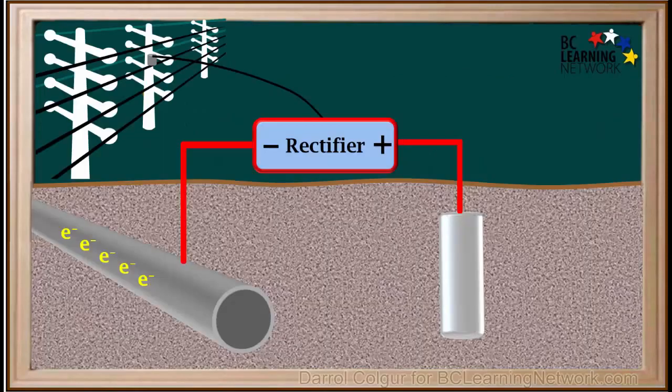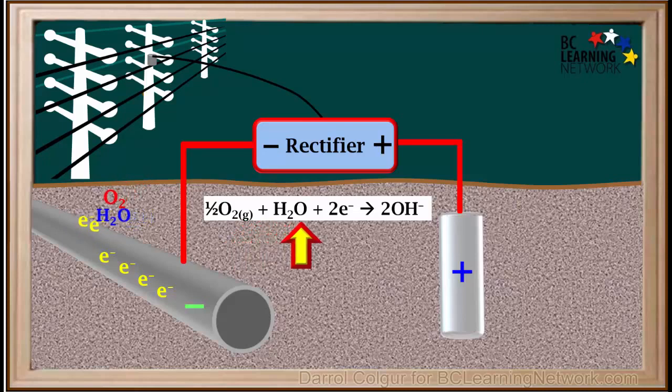For example, a rectifier takes electrons from an anode and pushes them onto the steel pipe, making it negative. So when oxygen comes along to be reduced, it uses these excess electrons from the pipe, thus sparing iron atoms in the pipe from being oxidized, and protecting it.